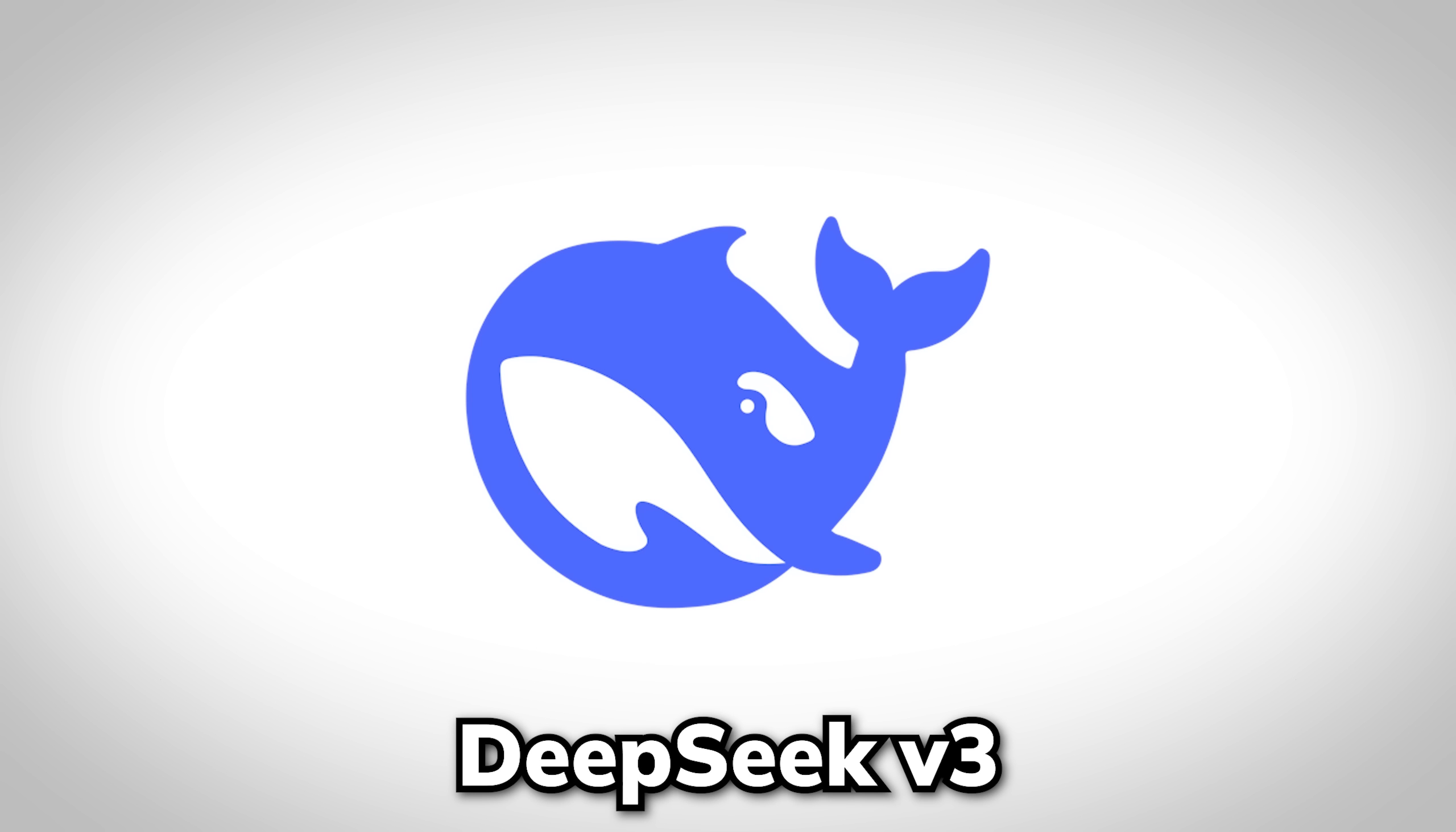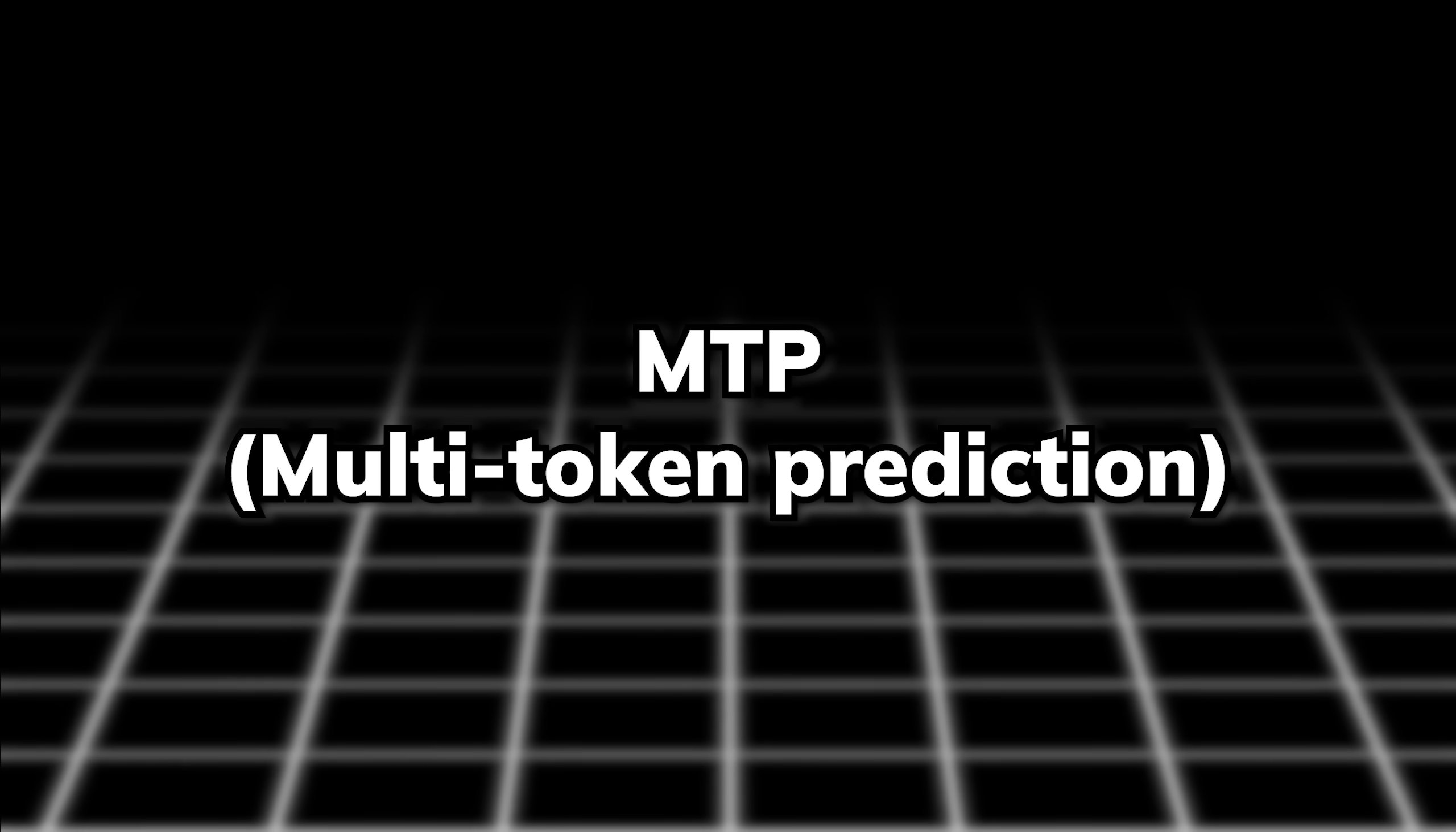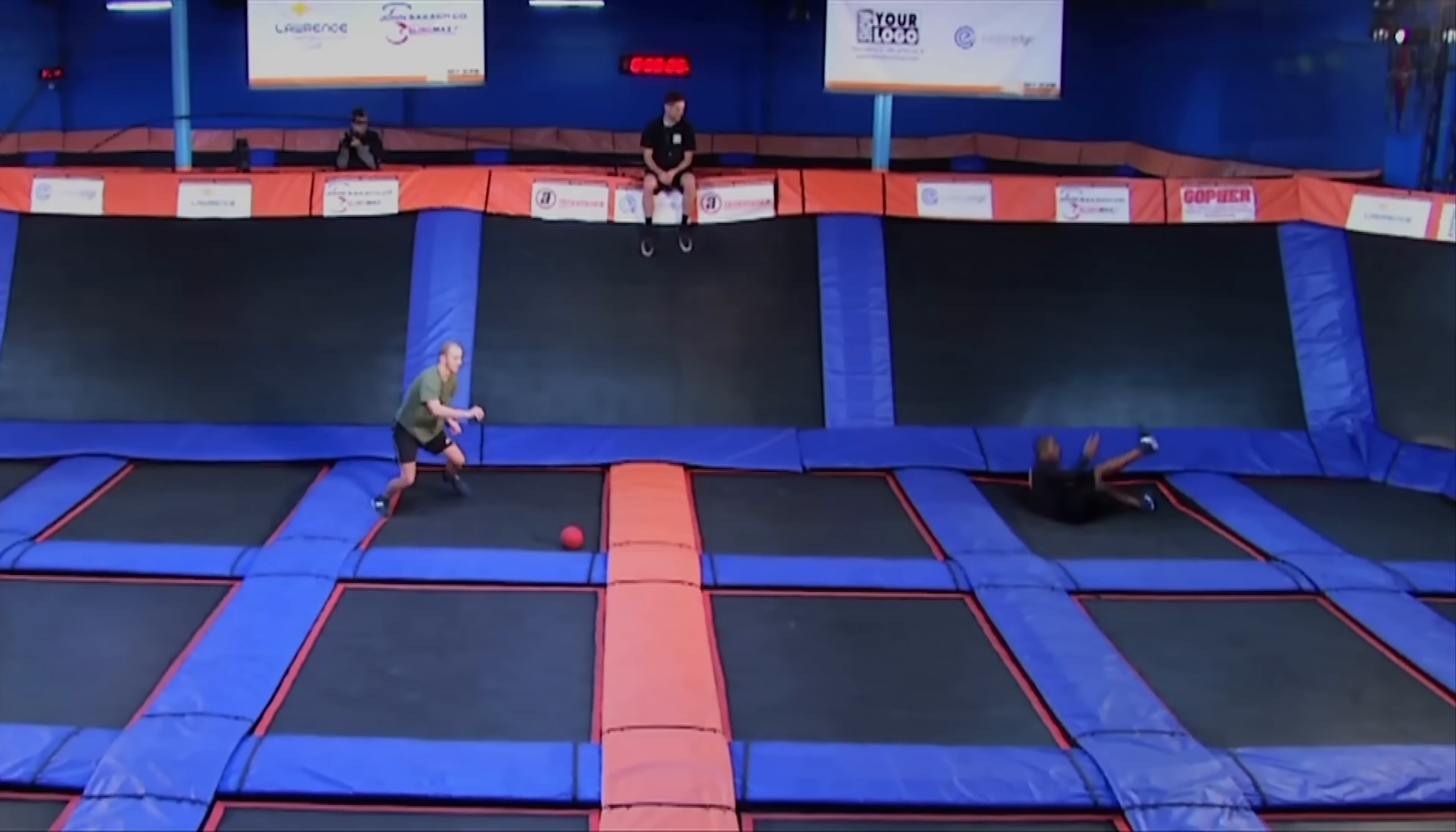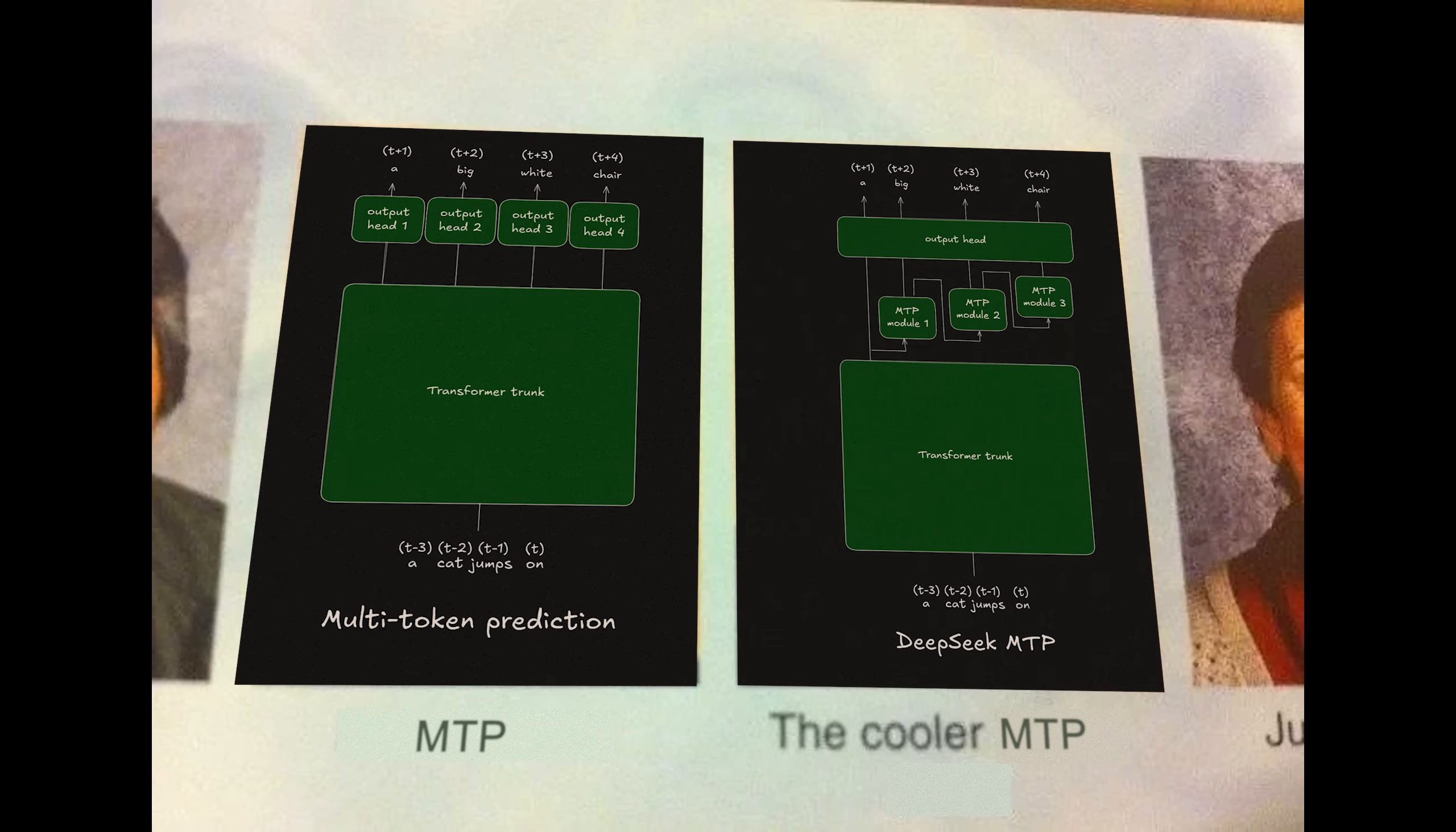So DeepSeek V3's approach is a very clever way to harness the core idea of multi-token prediction. It sidesteps the potential pitfalls of parallel MTP while still taking the best out of it, which overcomes the limitations of the simple next token prediction. Very creative, right?